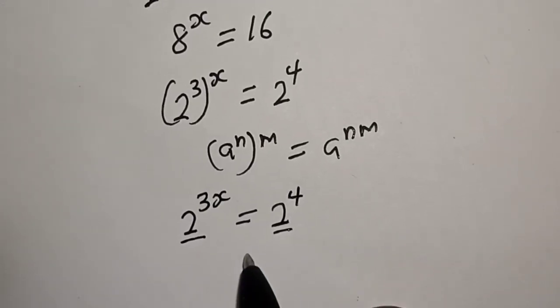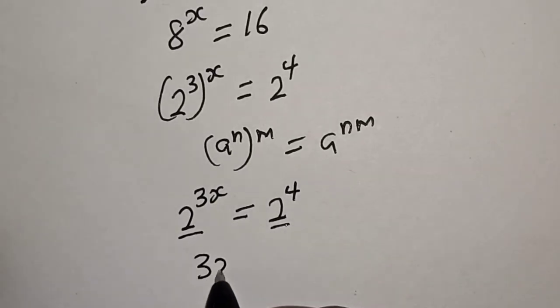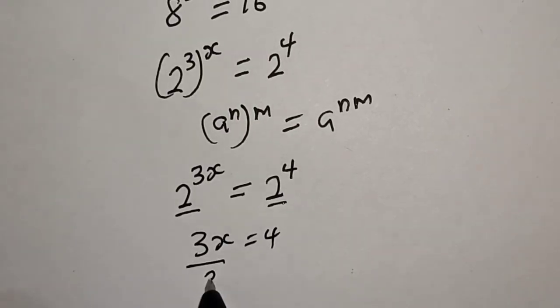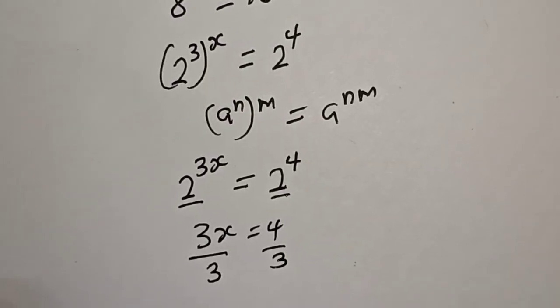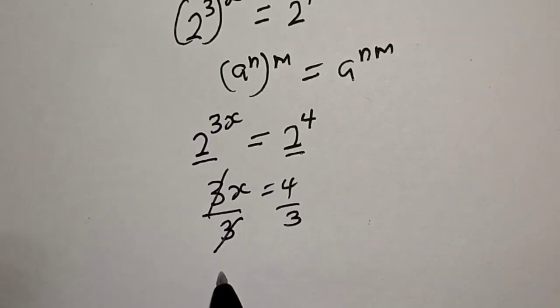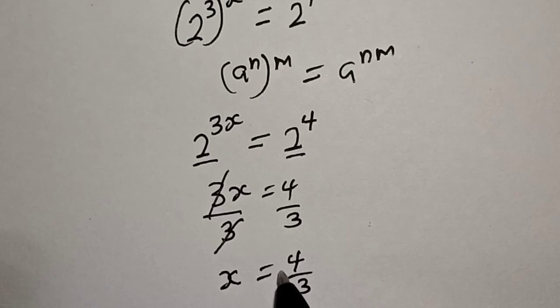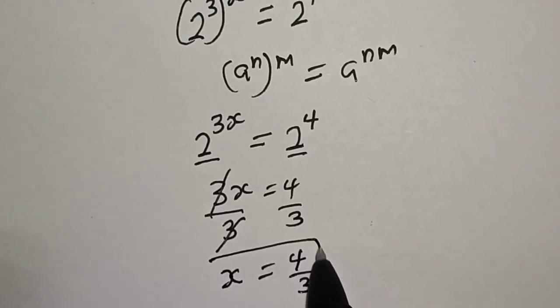They have the same base 2. Therefore, 3x is equal to 4. Divide both sides by 3. This one will cancel this. This means x is equal to 4 over 3. That is our final answer.